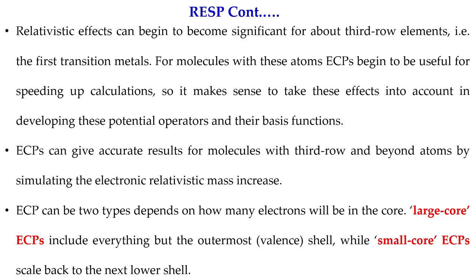Relativistic effects begin to become significant for about third-row elements — that is, beyond the first transition metals. For molecules with these atoms, ECPs begin to be useful for speeding up calculations, and it makes sense to take these relativistic effects into account when developing the potential operators and their basis functions. ECPs can give more accurate results for molecules with third-row and beyond atoms.